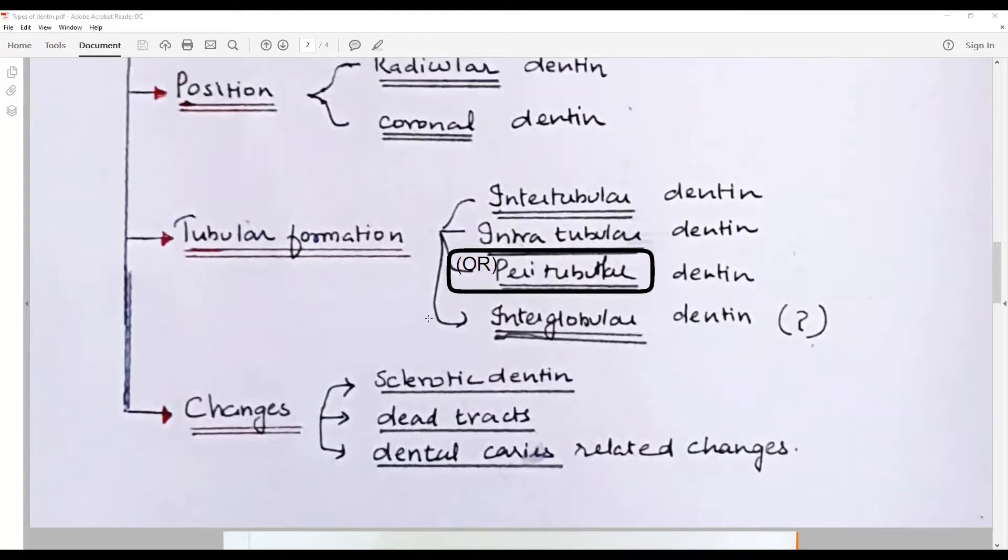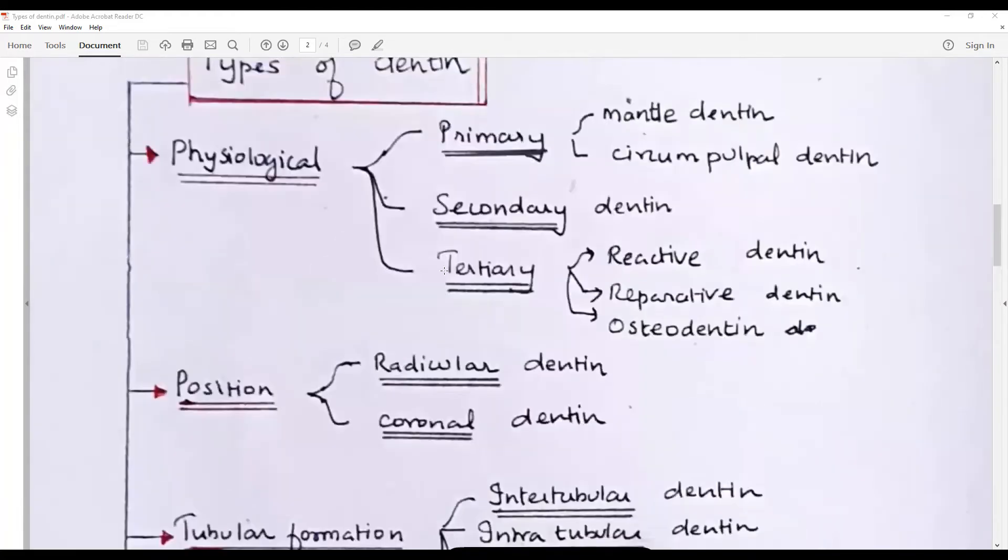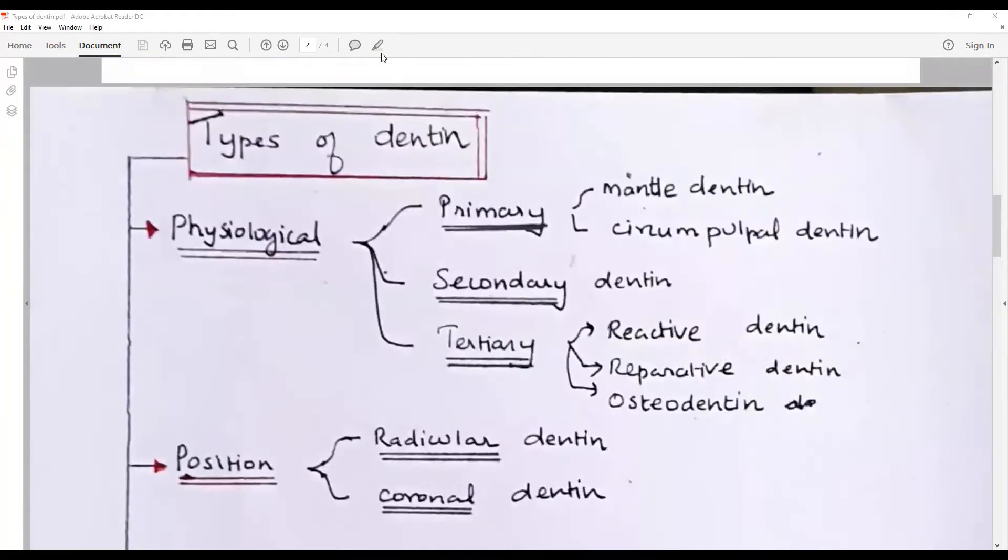This will be depending upon the timing: primary before root completion, classified as mantle dentin first ever formed, the bulk of the tooth circumpulpal dentin. After root completion, secondary dentin.